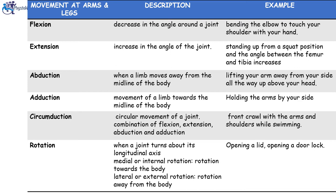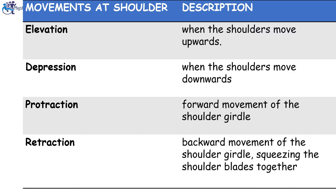Front crawl with the arms and shoulders while swimming is an example of circumduction. Rotation occurs when a joint turns about its longitudinal axis. There are two types of rotations: medial rotation and lateral rotation. Medial rotation, also known as internal rotation, means that rotation occurs towards the body. Lateral or external rotation occurs when the body rotates away from the body — for example, opening or closing the lid of a jar, or opening or closing a door lock. Other movements which occur at the shoulder joint include elevation (when the shoulder moves upward), depression (when the shoulders move downward), protraction (the forward movement of the shoulder cradle), and retraction (the backward movement of the shoulder cradle, squeezing the shoulder blades together).